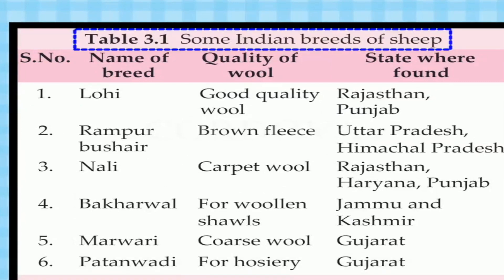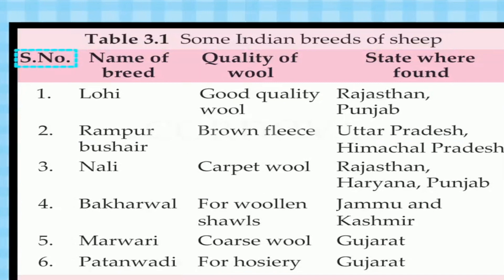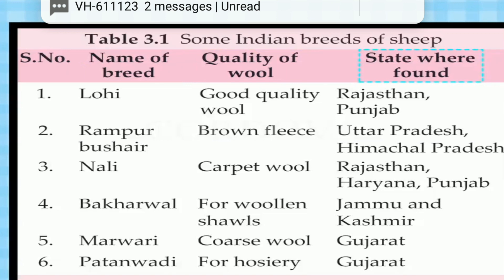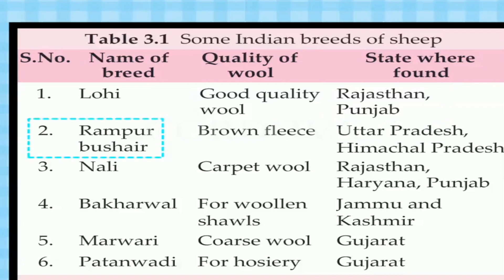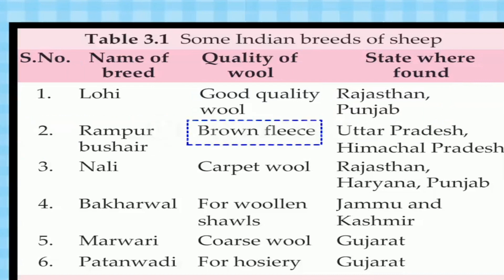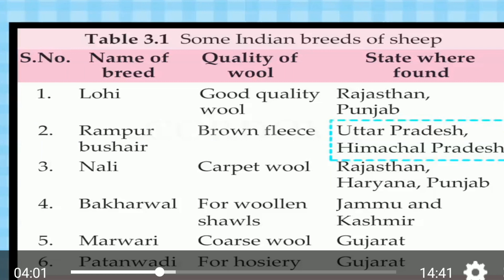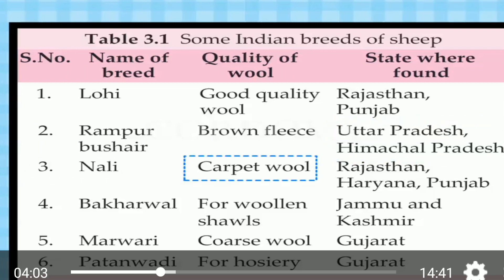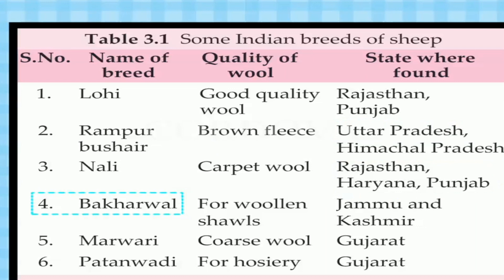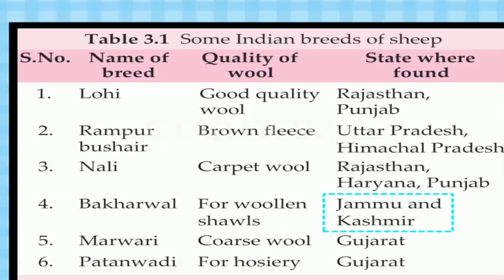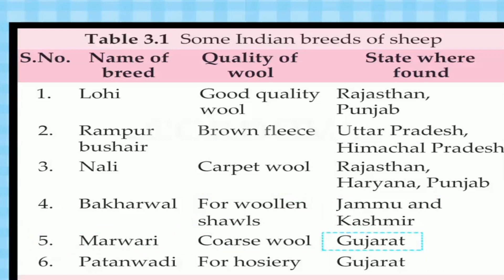Table 3.1: Some Indian breeds of sheep. 1. Lohi — good quality wool — Punjab, Rajasthan. 2. Rampur Bushair — brown fleece — Uttar Pradesh, Himachal Pradesh. 3. Nali — carpet wool — Rajasthan, Haryana, Punjab. 4. Bakharwal — woolen shawls — Jammu and Kashmir. 5. Marwari — coarse wool — Gujarat. 6. Bhatanwadi — pohoizri — Gujarat.